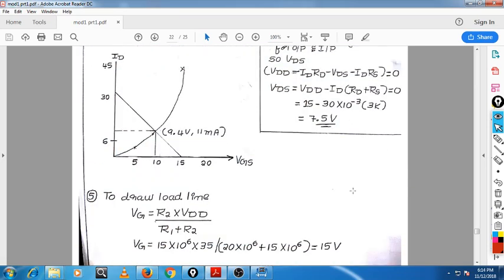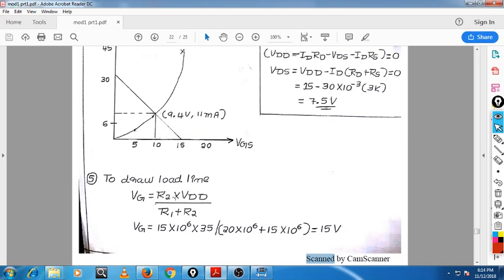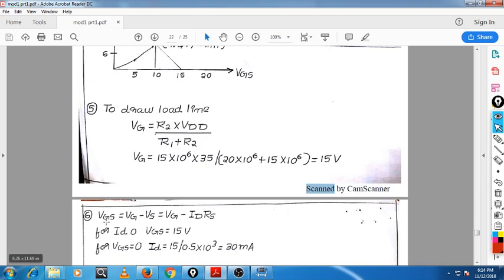To draw the load line, we have to decide VG. We need VG, then we will come to know VGS. To find out VG, according to our voltage divider method, VG is R2 times VDD divided by (R1 plus R2). So VG we got 15V. Now substitute VGS - VG is equal to 15 and we know ID and RS.